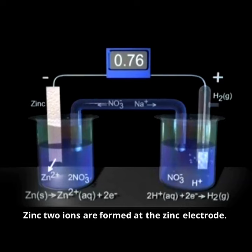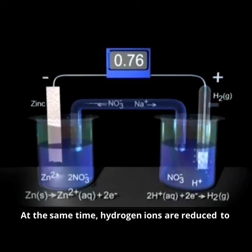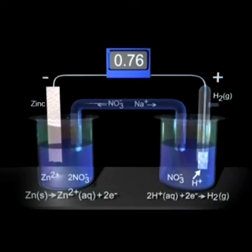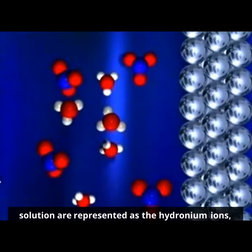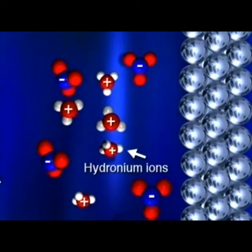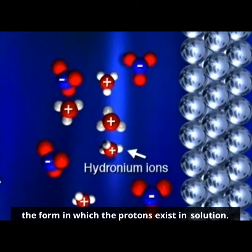Zinc 2 ions are formed at the zinc electrode. At the same time, hydrogen ions are reduced to hydrogen gas at the platinum cathode. In this molecular level view, the hydrogen ions in solution are represented as the hydronium ions, the form in which the protons exist in solution.